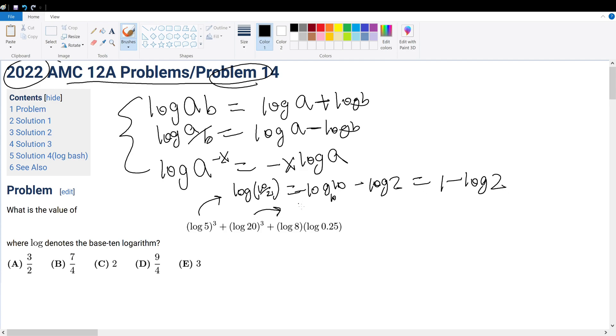And then same logic goes here. Log 20 could be rewritten as 2 times 10, so if you can already see it, this would be just 1 plus log 2. Log 8 could be rewritten as log 2 cubed, which is just 3 times log 2.